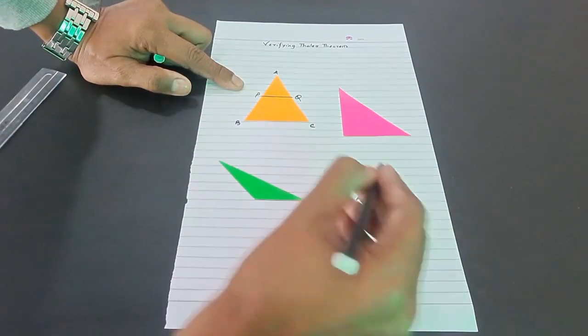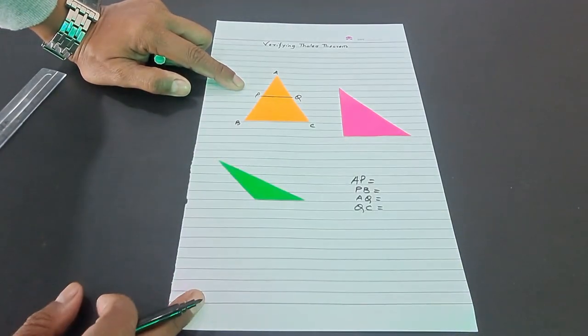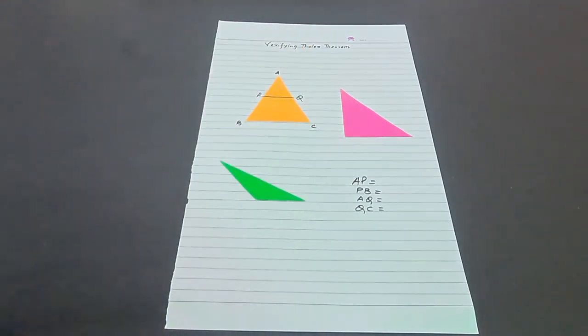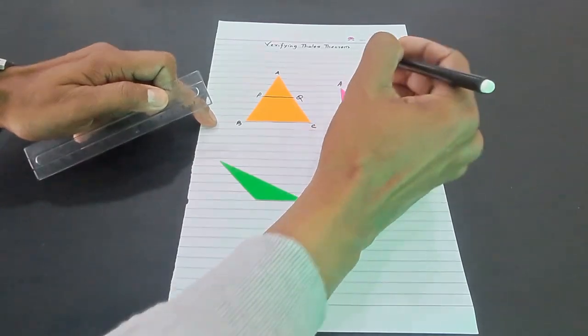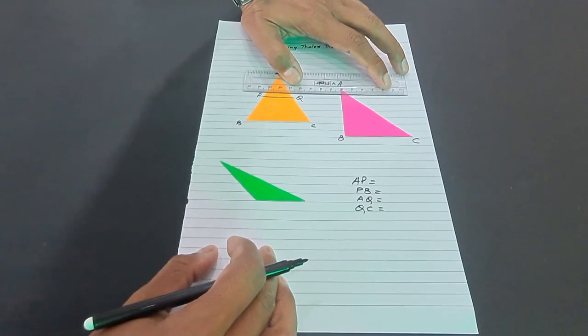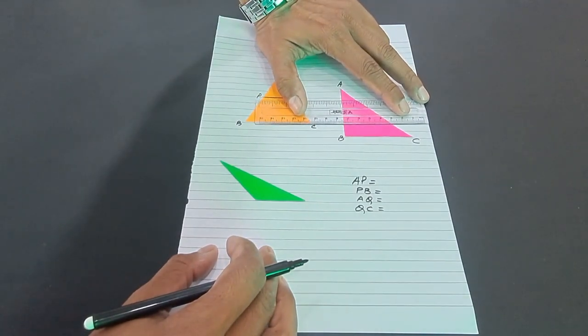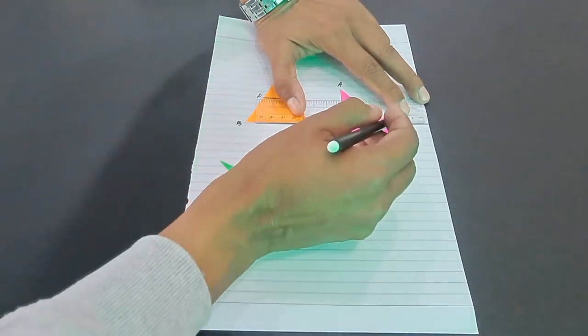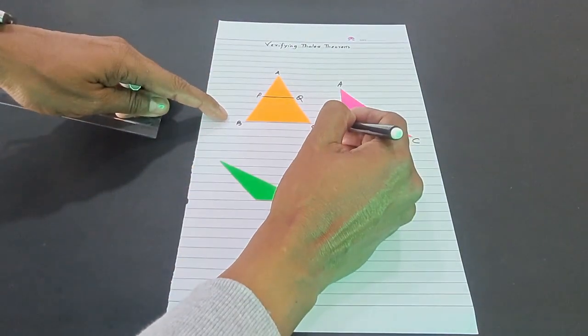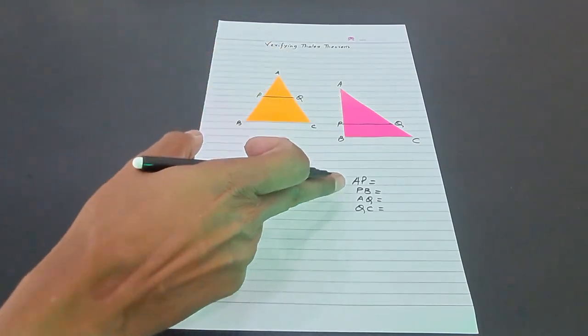In the second figure, name it ABC similar to the first figure and draw any line parallel to BC. You can take it anywhere. If I take it very close to BC like this, I can draw it and name it PQ. In this figure we make the same four measurements: AP, PB, AQ, and QC.